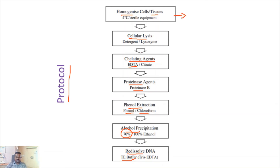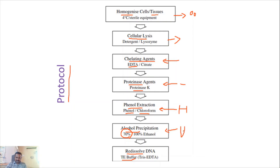Individual cells are broken down by homogenization. Cell lysis uses a chemical method to disrupt the cell wall — detergent such as SDS and lysozyme — with EDTA as a chelating agent. Proteinase K treatment removes proteins, followed by phenol-chloroform extraction for further protein removal, and alcohol precipitation to precipitate the DNA from the aqueous solution. The DNA is then resuspended in TE buffer.